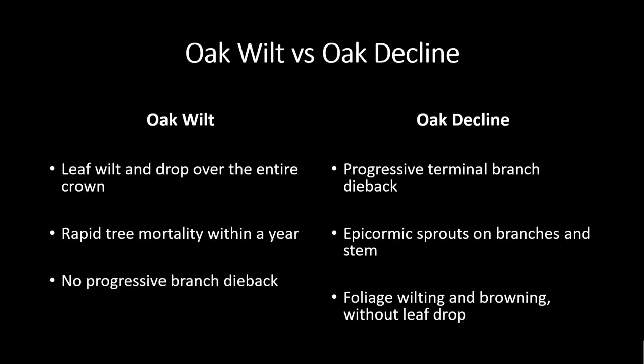Let's compare oak wilt with oak decline. Oak wilt symptoms include wilting and leaf drop over the entire crown, with the leaf base remaining green. Mortality will occur within a year, and dieback is generally not observed. In oak decline, you'll see progressive terminal branch dieback, epicormic sprouts, discoloration, and wilt, but without leaf drop.